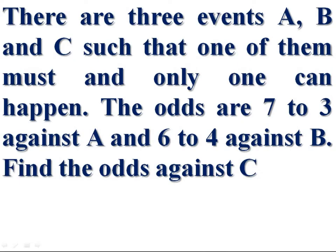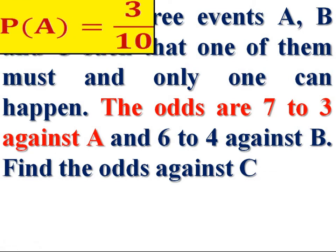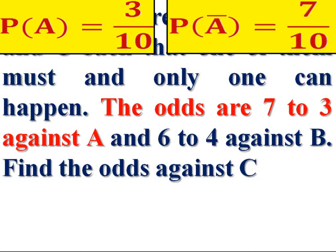There are three events A, B and C. The odds are 7 to 3 against A. So the probability of A — the chance that A happens — is 3 by 10. P of A = 3/10. P of A dash (not A) = 7 by 10.